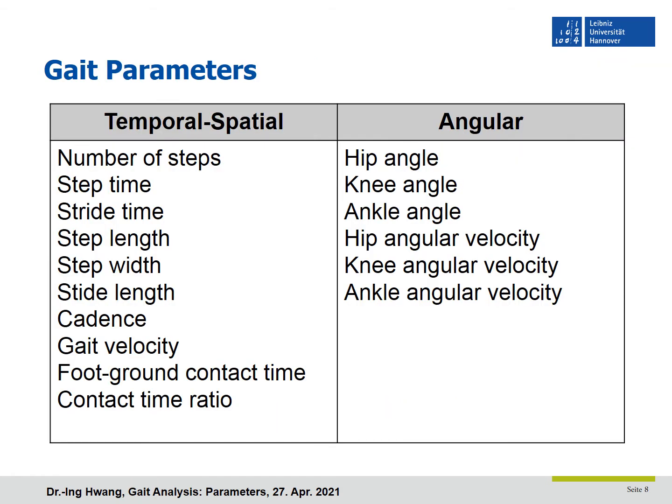There are two types of gait parameters: temporal-spatial parameters and angular parameters. Temporal-spatial parameters are related to time, length, and linear movement — such as number of steps, step time, step length, gait velocity, and so on. Angular parameters are related to angular movement of joints, such as hip, knee, and ankle angles, and their angular velocities.